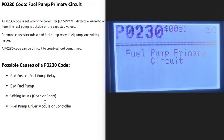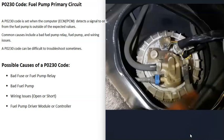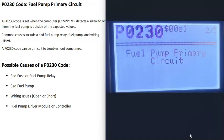Today I'm talking about a P0230 code — what it is and how you go about fixing it. A P0230 is a fuel pump primary circuit code. Basically, the computer is seeing some kind of problem with the wiring going to the fuel pump. The computer monitors what the voltage should be at the fuel pump, and if it's too low or too high, it will set a P0230 code.